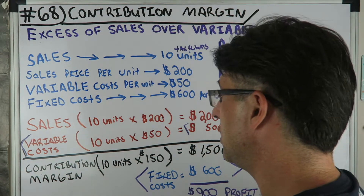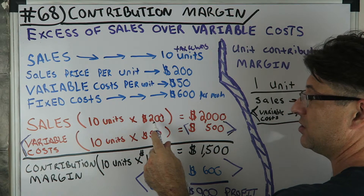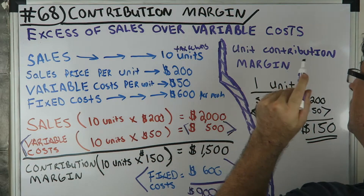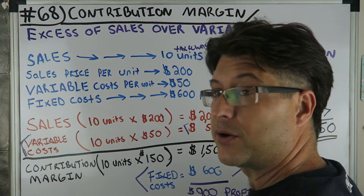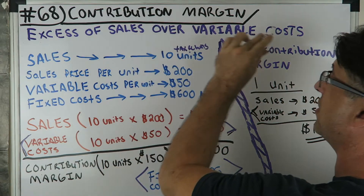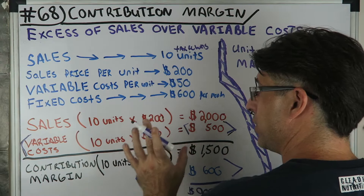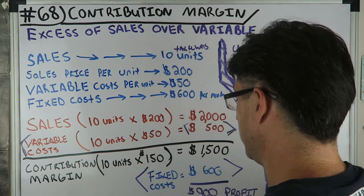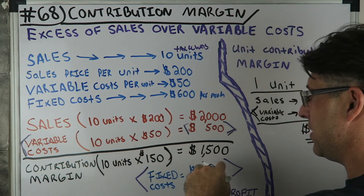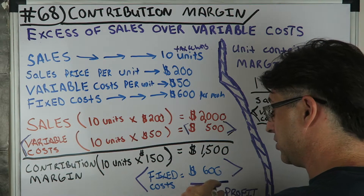That's the contribution margin — profit before fixed costs. It's not the profit; it's profit before fixed costs. That's why they call it contribution margin — it's your margin that you have to contribute to covering fixed costs. So $1,500 contribution margin, then you pay out fixed costs of $600, and you have $900 profit.